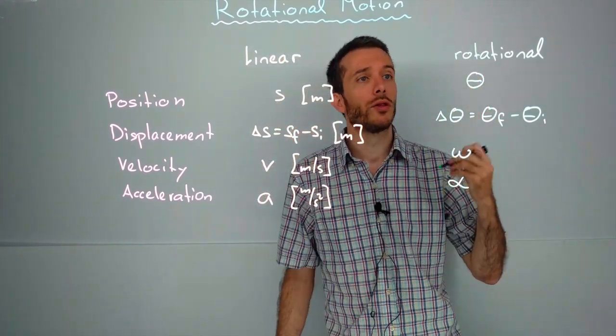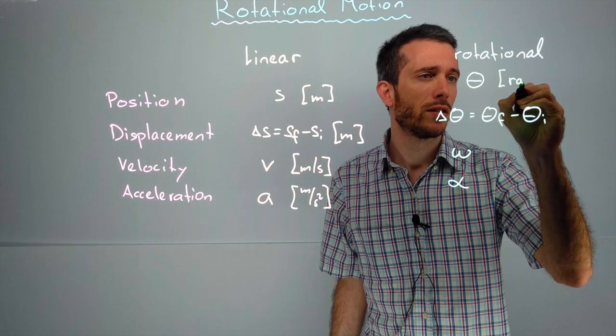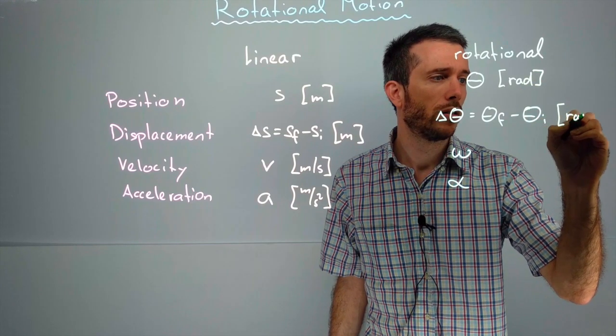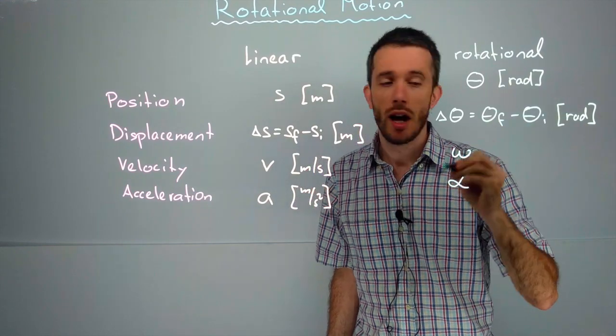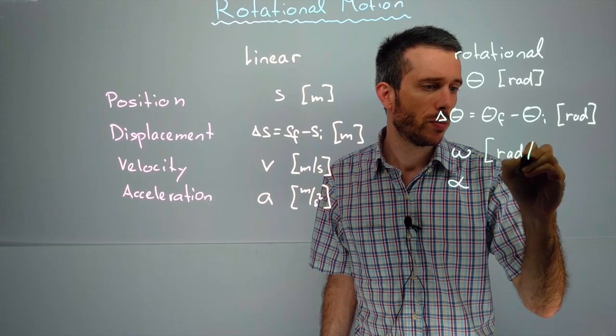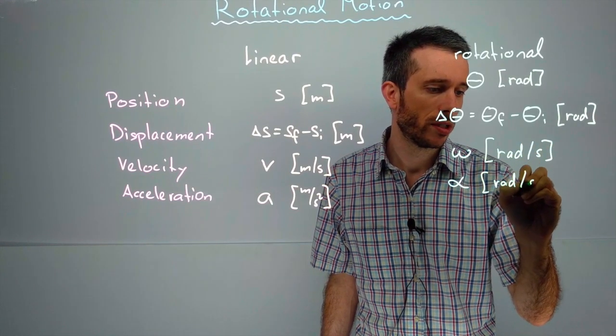In the rotational case we're going to give the angle in radians. So the displacement also in radians. The angular velocity is going to be given in radians per second. And the acceleration in radians per second squared.